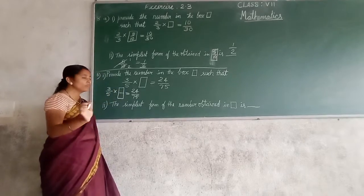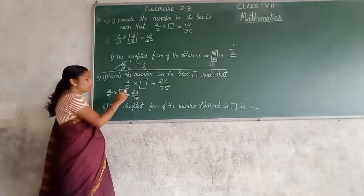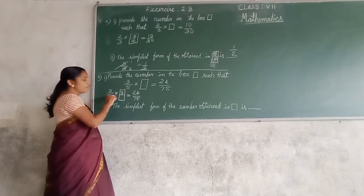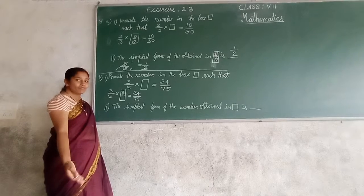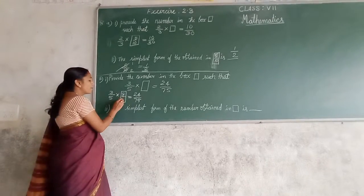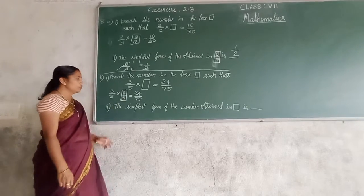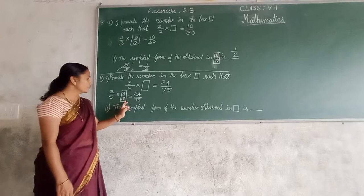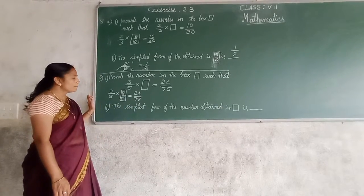3 upon 5 multiplied by which number gives you 24 upon 75? Product of the numerator: 3 multiplied by which number gives 24? 3 eights are 24, so that is 8. And for the denominator: 5 multiplied by which number gives 75? 5 fifteens are 75, so that is 15. So 3 eights are 24 and 5 fifteens are 75.